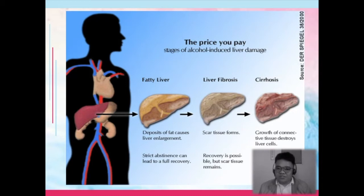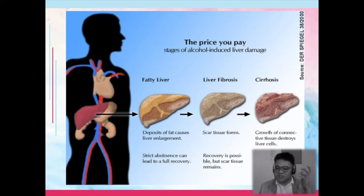So this is what happens with alcohol: fatty liver, then liver fibrosis, and then cirrhosis. This is your Laennec's cirrhosis.